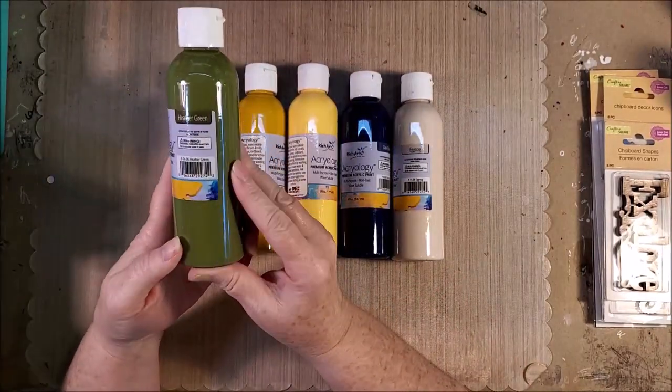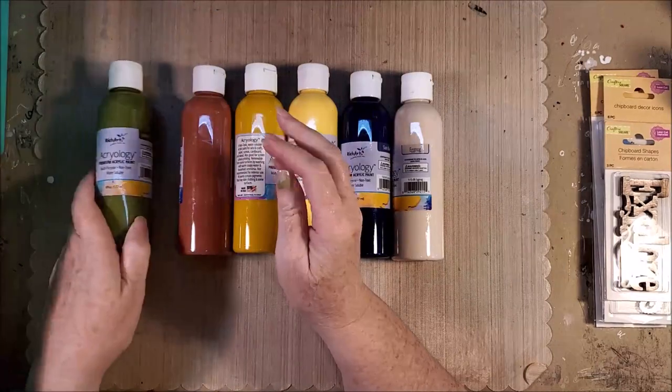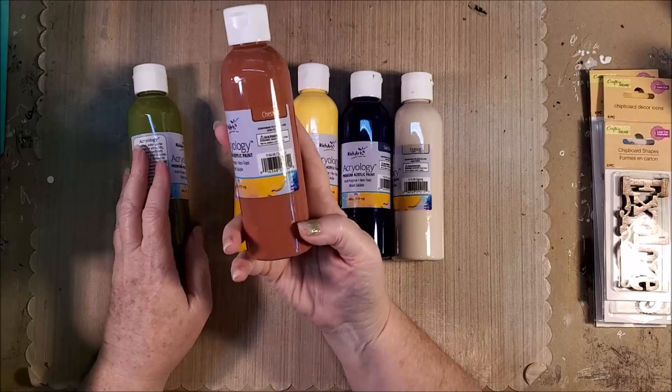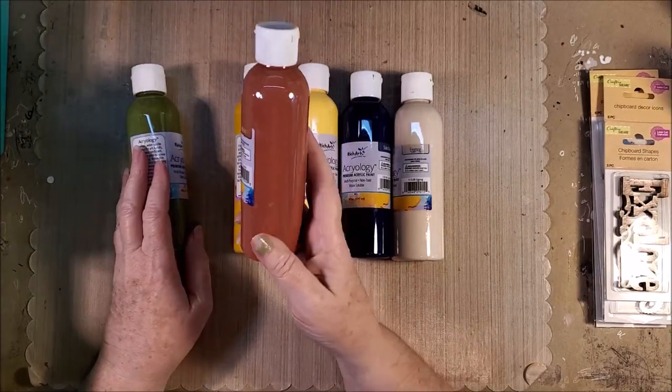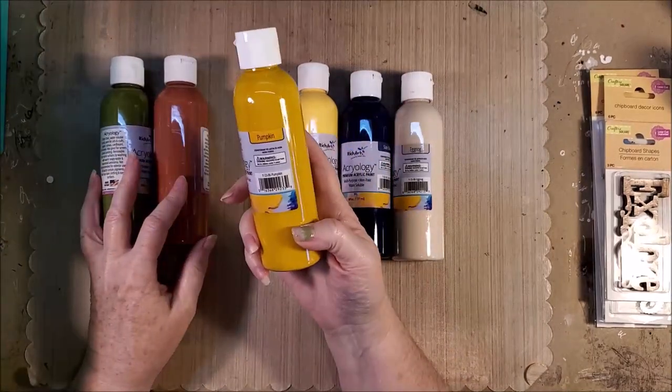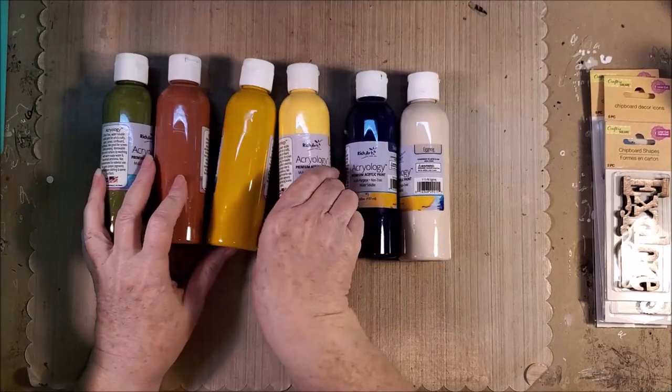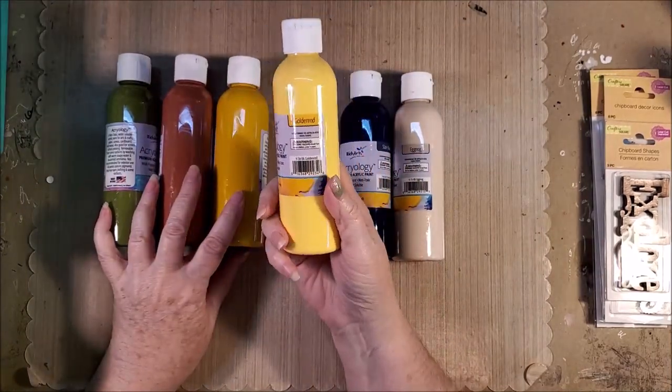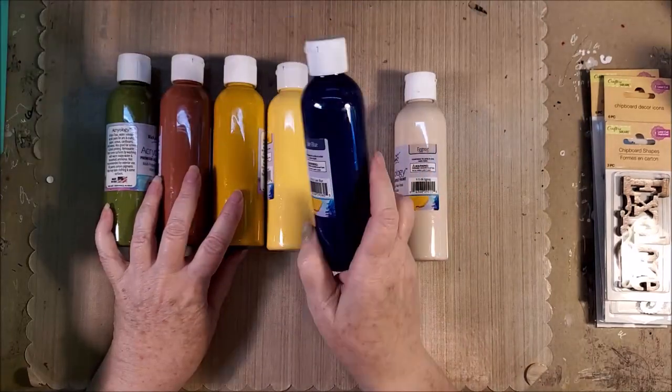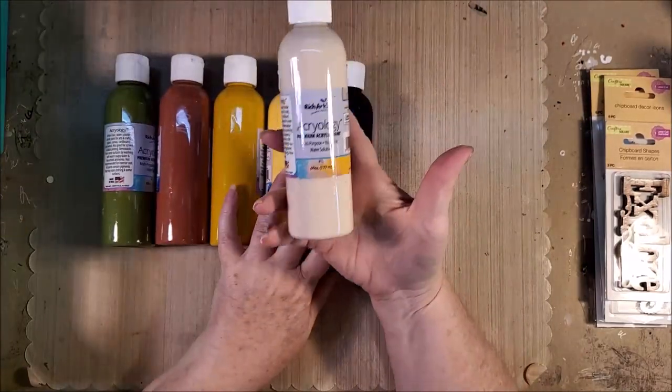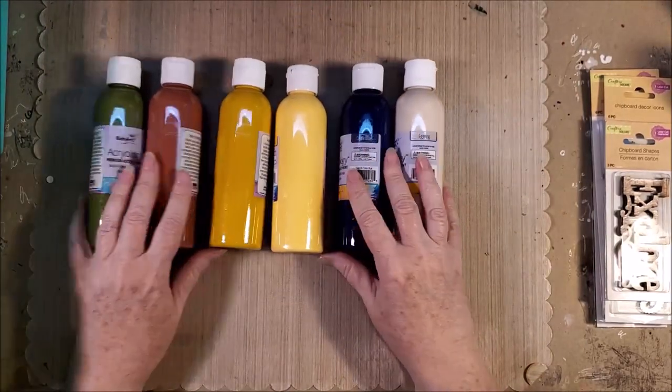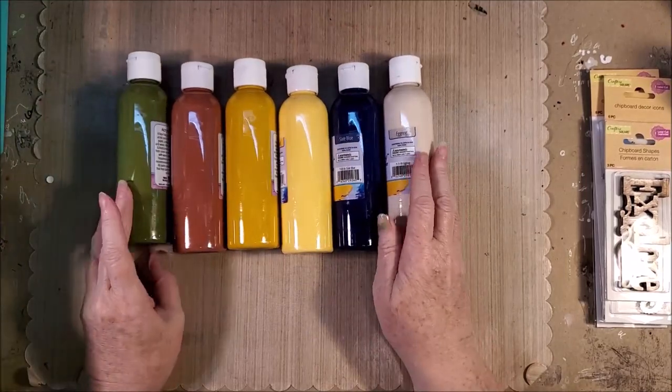This one is called Heather green and it's kind of an olive green. This one is called chestnut. It's a really fun brown, red-brown kind of color. This one looks like mustard, but it's called pumpkin. And you see, they all have a fall name—golden rod. This one's called slate blue and it's gorgeous. And this one's called eggnog and they don't have a cream. They haven't had a cream before. So I did go ahead and get all of these just because they were such pretty colors.